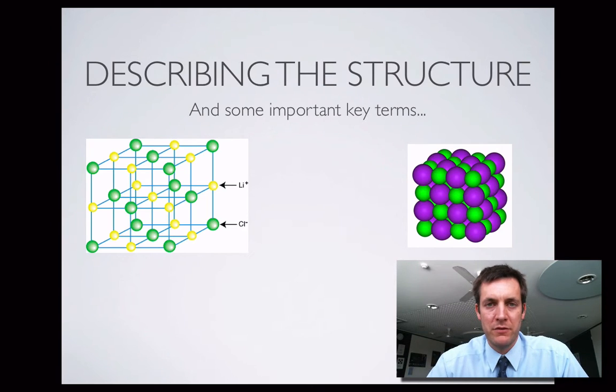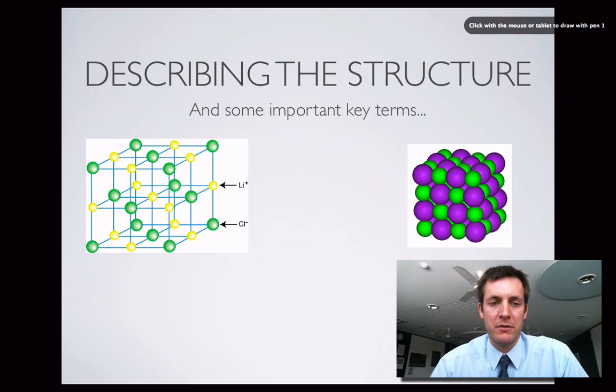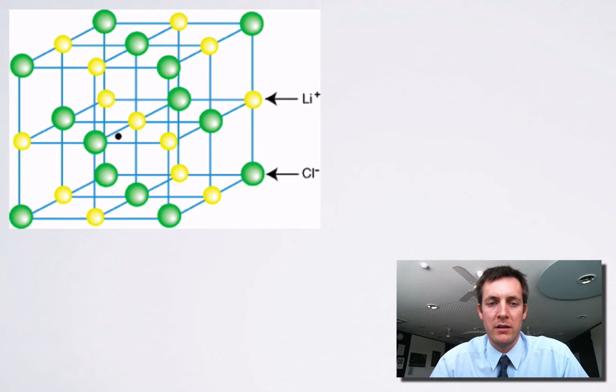So first of all let's look close up at what an ionic lattice looks like, or in other words describe the structure of an ionic compound. In this left hand diagram over here we've got a lithium chloride lattice, and it shows that we've got lithium ions and chloride ions. Lithium ions are a bit smaller than the chloride ions because they've lost electrons and these have gained.